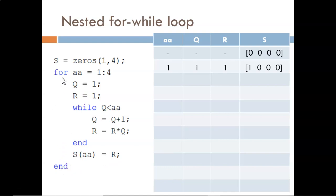So, now we update AA to a value of 2. Q and R are reassigned to ones, and the while condition is checked. Is 1 less than 2? Yes, that's true. So, we enter the while loop.